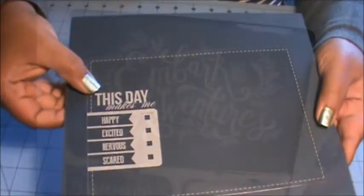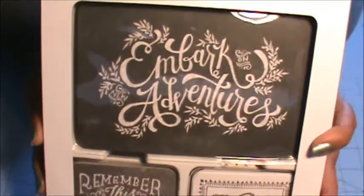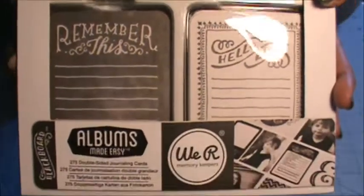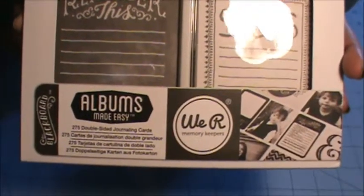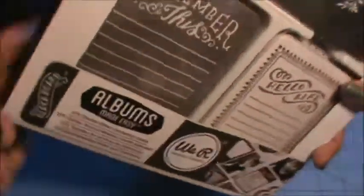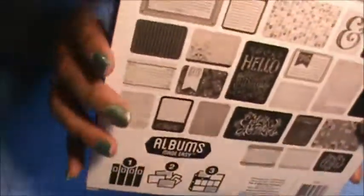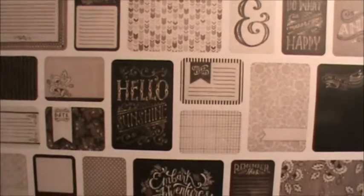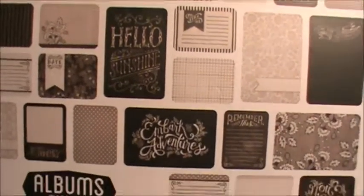Also at that workshop, we received this full set of We Are Memory Keepers journaling cards. There are 275 cards in this pack. This one is called Blackboard and it has that chalkboard look to it. Here are some of the designs in this set. There are 4x6 and then 3x4 cards in here. I see some really really cute ones, so I'm really excited about this.